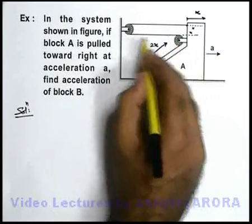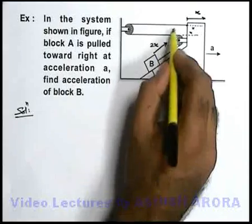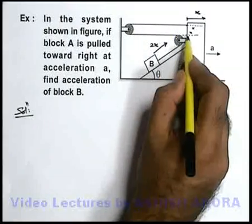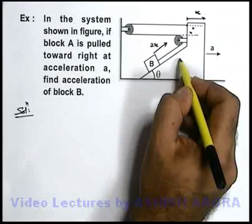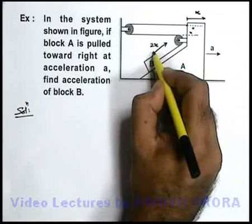And obviously as string is tied up over here, this block B has to go up with a distance 2x. Then only it is possible that the string will remain tied.